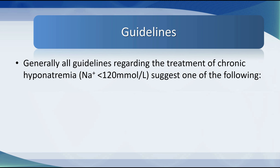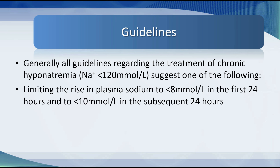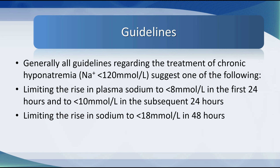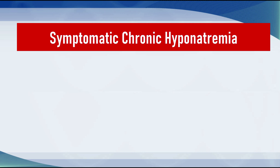To prevent osmotic demyelination syndrome, believed in the majority of cases to be caused by rapid overcorrection of sodium, consensus guidelines have been developed by experts. Generally, all guidelines for chronic hyponatremia with sodium less than 120 millimoles per litre suggest limiting the rise to less than 8 millimoles per litre in the first 24 hours and less than 10 in the subsequent 24 hours, or less than 18 millimoles per litre in 48 hours. The former is the European guideline, the latter American. In our practice we follow the European guideline.